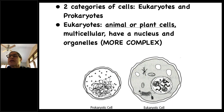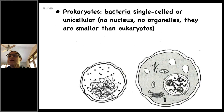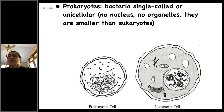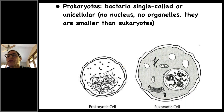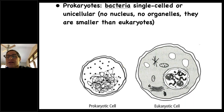That's the animal or plant cell on the right. Prokaryotes — the picture on the left — are a lot simpler. Those are bacteria. They're single-celled, or unicellular. They have no nucleus and no organelles, and they're smaller than eukaryotes. In the prokaryotic cell you see squiggles not contained in a nucleus. They have a cell membrane, cytoplasm, and genetic material, but not a lot of complexity.